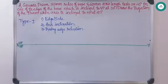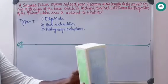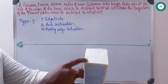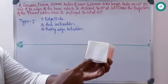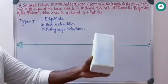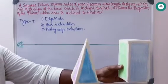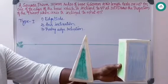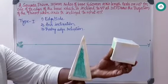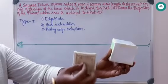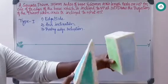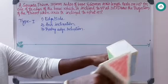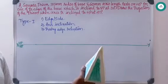Today we will discuss prisms in projection of solids. A prism has a particular shape on both the top and bottom surfaces — for example, a square prism has a square on both faces. The difference between a prism and a pyramid is that in a prism the top surface is the same shape as the base, whereas in a pyramid the top comes to an apex.